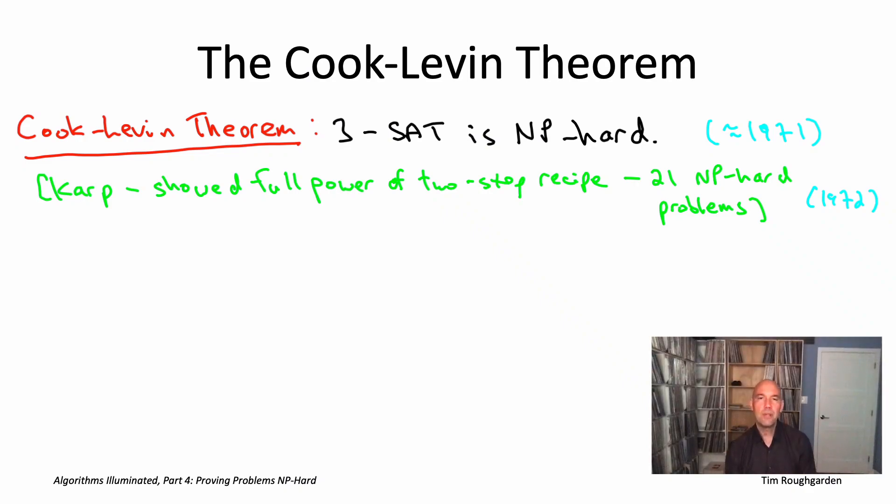In case you're wondering where the 3 in 3-SAT comes from, the reason for the 3 here is that's the smallest number for which the problem is NP-hard. You may have seen the 2-SAT problem, where you have disjunctions of one or two literals, which can actually be solved in linear time. One way is a reduction to the problem of computing strongly connected components of a suitable directed graph.